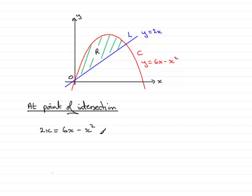Now, we have a quadratic equation, and like all quadratic equations, it needs to be rearranged to make it equal to 0. So if I add x squared to both sides, I'm going to have x squared, and if I subtract 6x from both sides, 2x minus 6x is minus 4x, and that's going to leave me with 0.